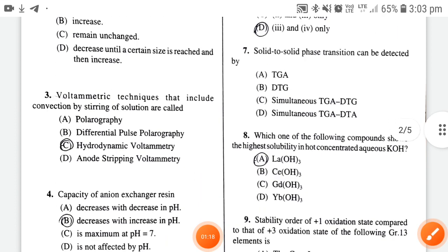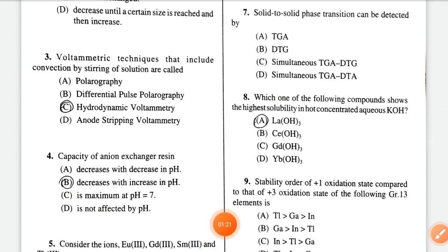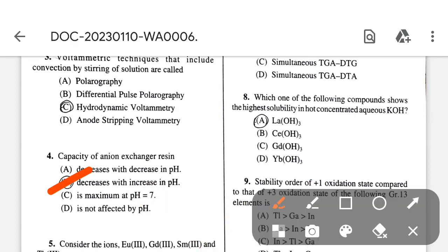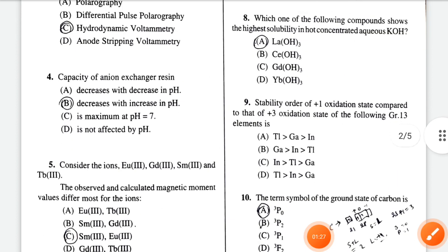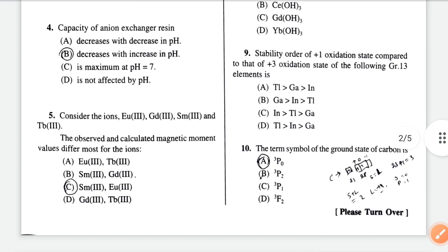Next, capacity of ion exchange resin decreases with increase in pH, so option B is right. Consider the ions Au, Eu3+, Ga3+, Sm3+, and Tb3+. The observed and calculated magnetic moment values differ most for samarium(III) and europium(III), option C.